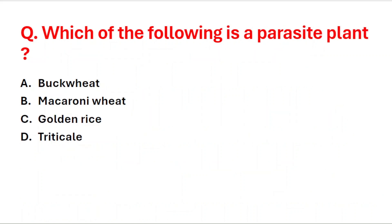Next question: which of the following is a parasite plant? A: buckwheat, B: macaroni wheat, C: golden rice, D: triticale. The right answer is option C, golden rice.